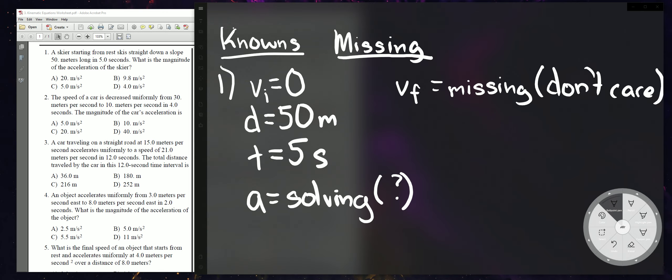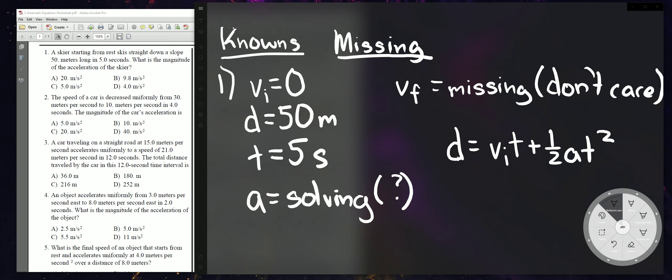Which equation has all four of these variables that I need to solve? The only equation that has all these variables is d = vit + ½at². The reason I do it this way is because on a test, the end goal is for you to look only at your reference table to figure out which formula to use. This formula has d, vi, t, and a — and it does not include VF, which we don't need.